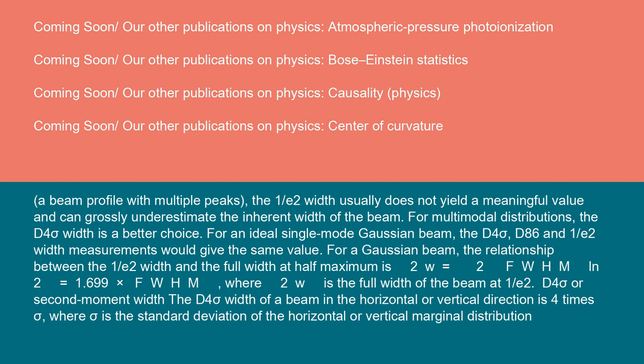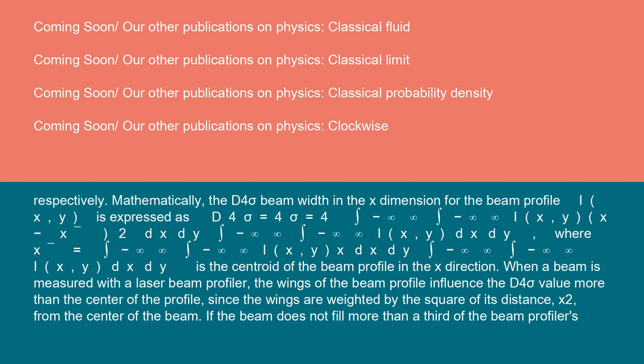D4 sigma or second moment width: The D4 sigma width of a beam in the horizontal or vertical direction is 4 times sigma, where sigma is the standard deviation of the horizontal or vertical marginal distribution. Respectively, mathematically, the D4 sigma beam width in the X dimension for the beam profile I(x,y) is expressed as D4σ = 4σ = 4√[∫∫I(x,y)(x-⟨x⟩)²dxdy].